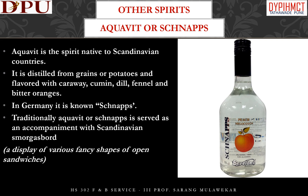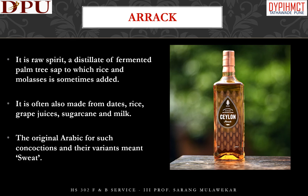The next type of spirit is Arrack. It is a raw spirit — a distillate of fermented sap of palm trees, to which rice and molasses is sometimes added. It is often also made from dates, rice, grape juices, sugarcane, and milk. The original Arabic word for such concoctions meant 'sweat'.